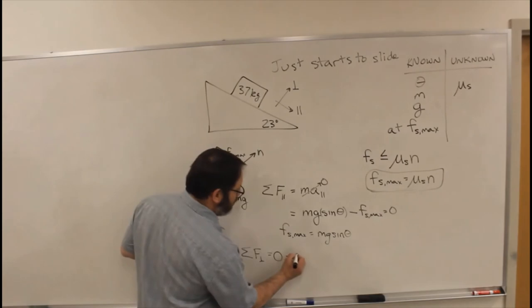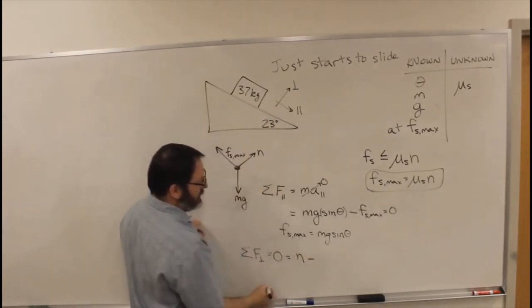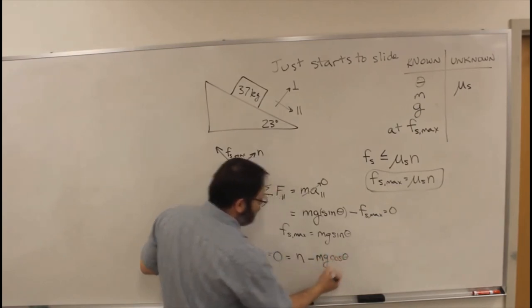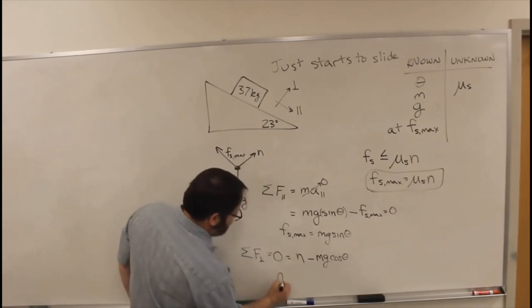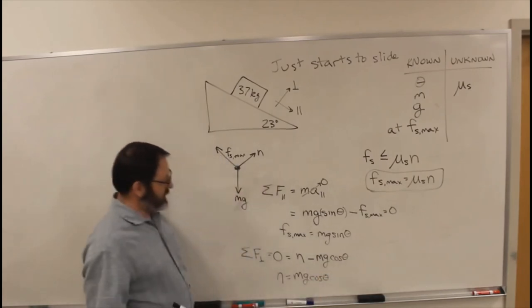And that is, let's see, this direction, that's the normal force. And then there's a component of gravity minus mg cos theta. So we can rearrange that to say the normal force is mg cos theta.